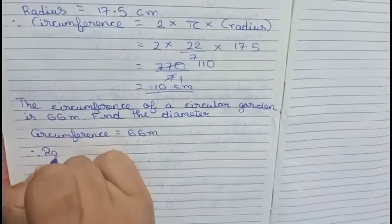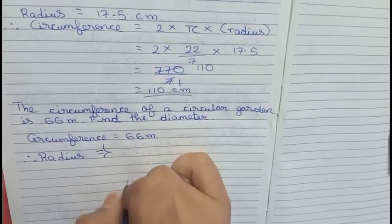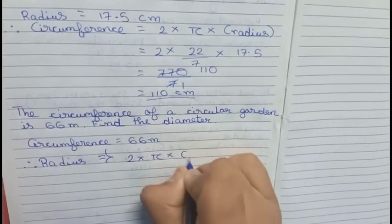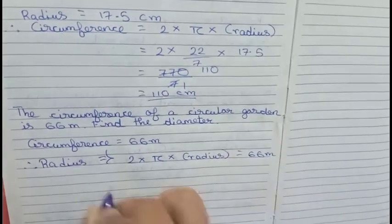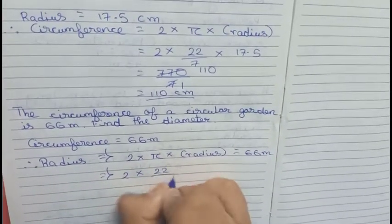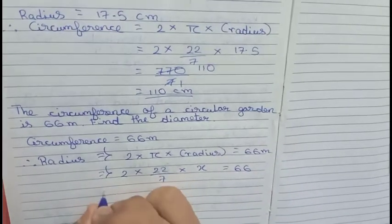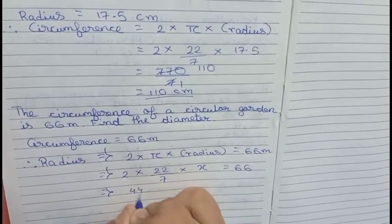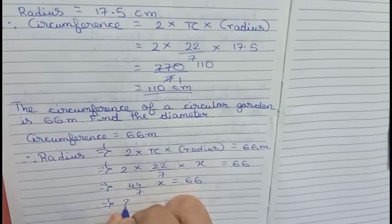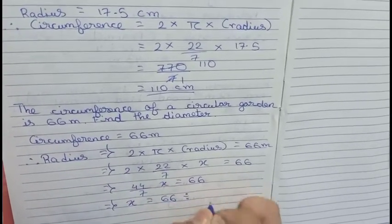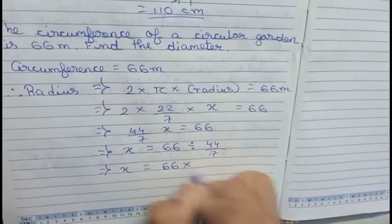Now we find our radius first. We solve this in equation format. The formula is 2 into pi into radius equals 66 meters. Putting in values: 2 into 22 by 7 into x equals 66 meters, which gives 44 by 7 times x equals 66. So x equals 66 divided by 44 by 7.